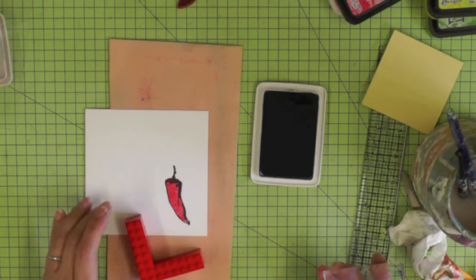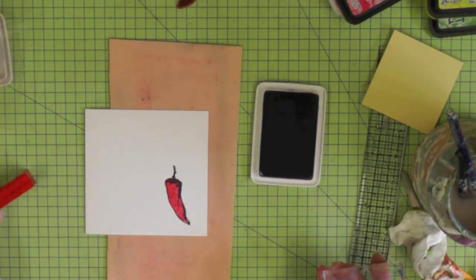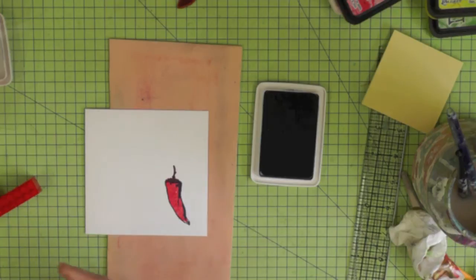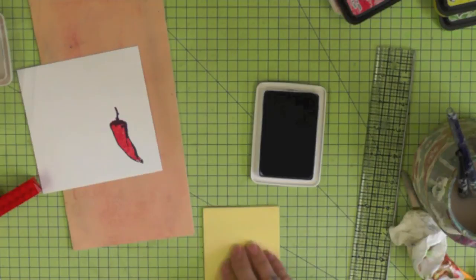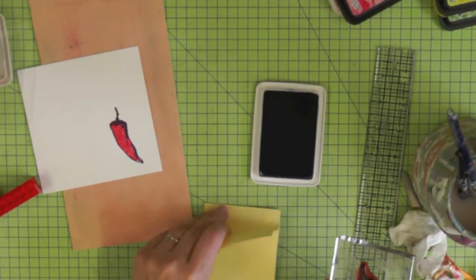That is technique number one finished which was using a stamp positioner and now I'm going to show you technique number two which is to create a mask so that we can layer up all that lovely wording across the back of the chili so that the chili remains in the foreground.